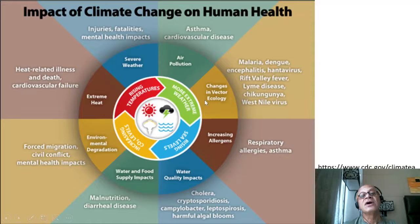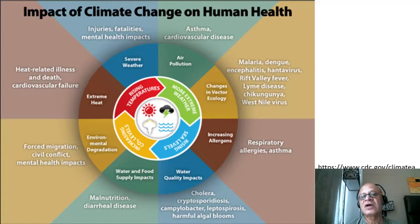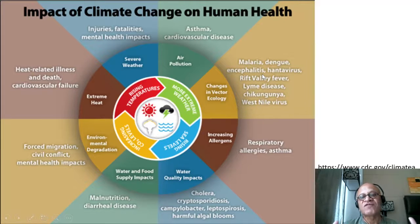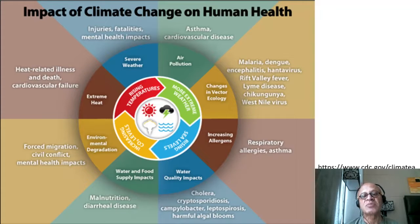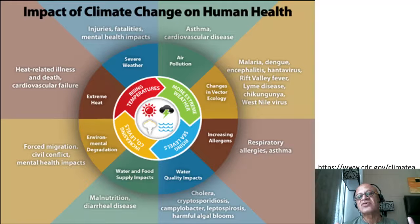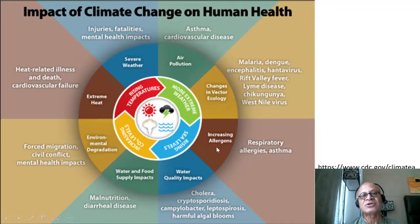Changes in vector ecology: we will look briefly at the history of malaria, but also dengue, encephalitis, hantavirus, Rift Valley fever, Lyme disease, chikungunya, and West Nile virus. Warming is expanding the range of mosquitoes latitudinally and also in altitude — up mountains in places like Burkina Faso. The range of tropical diseases is expanding into higher latitudes, and countries like the US now have Lyme disease, while chikungunya has spread into Europe as well.